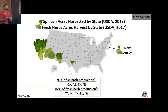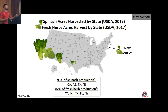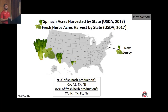This map shows the distribution of basil and spinach production in the United States. Production is very consolidated, dominated by four or five states: 93% of spinach is grown in California, Arizona, Texas, and New Jersey, and 82% of fresh herbs are grown in California, New Jersey, Florida, and New York. These crops are grown in a handful of states and then transported to consumers throughout the country, which is largely associated with food waste due to the perishable nature of leafy greens, degraded nutritional quality, and significant greenhouse gas emissions.